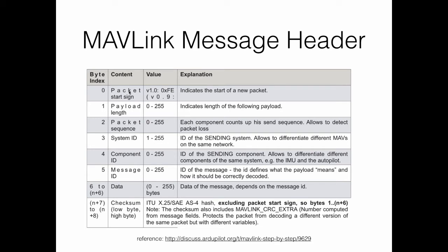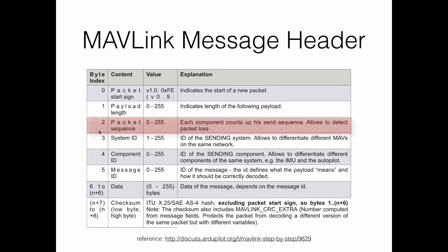The MAVLink message header format is presented in the following table. The header contains a packet start sign encoded into one byte, which indicates the start of the packet. The byte with index 1 corresponds to the payload length, encoded on one byte for a value between 0 and 255. Byte with index 2 refers to the packet sequence, which indicates the incremental sequence number of the packet. If the sequence number reaches 255, it is reset back to 0.